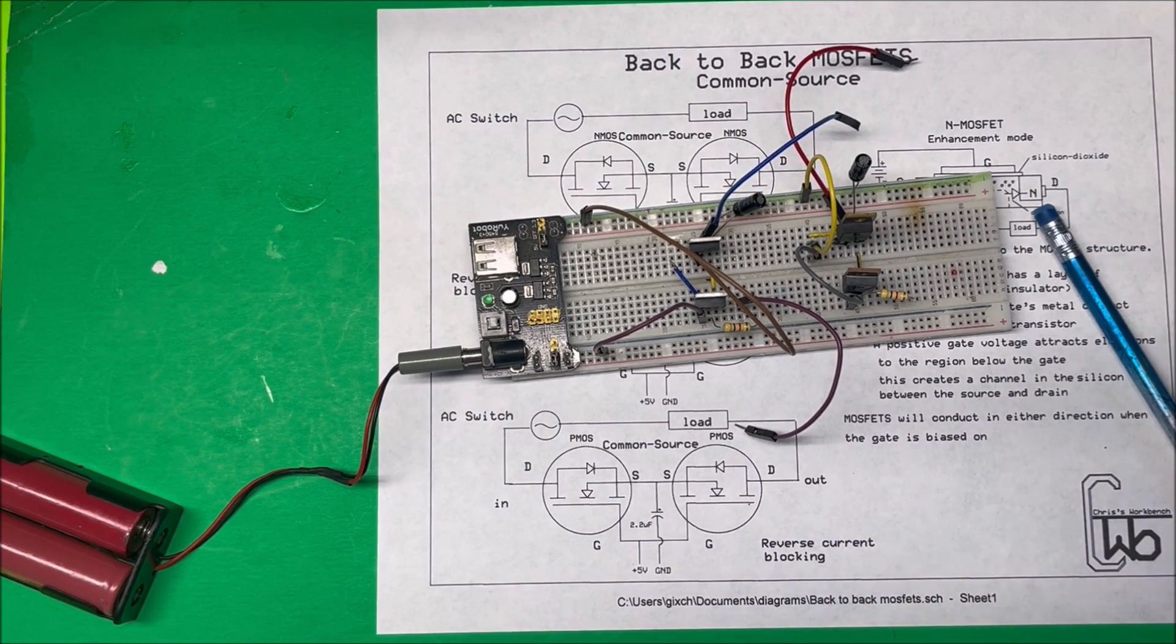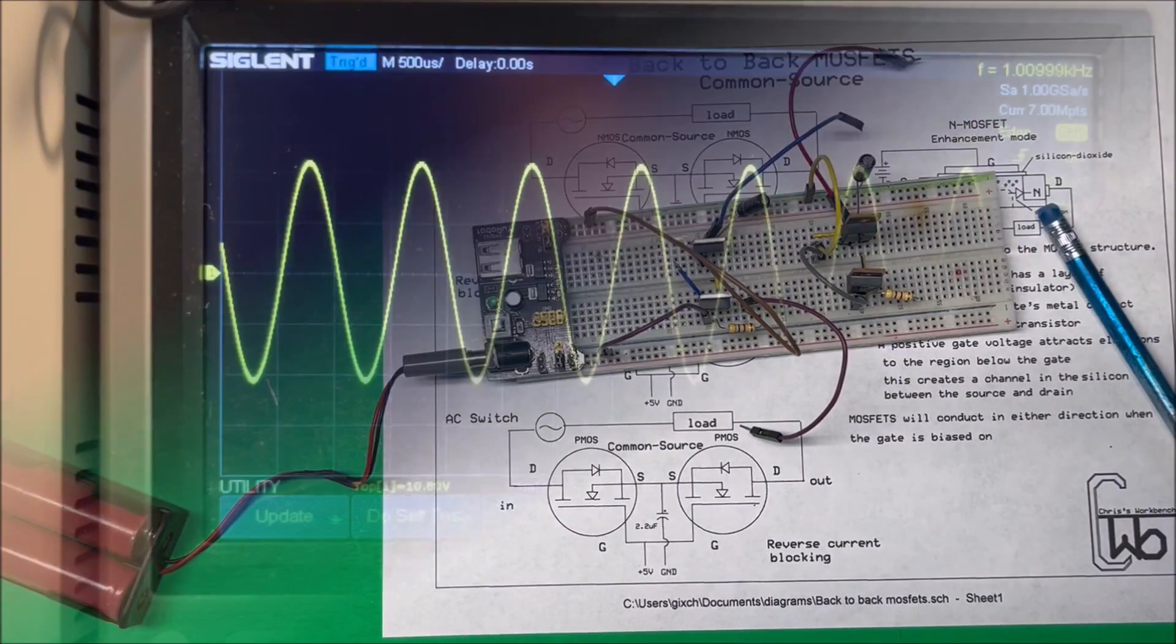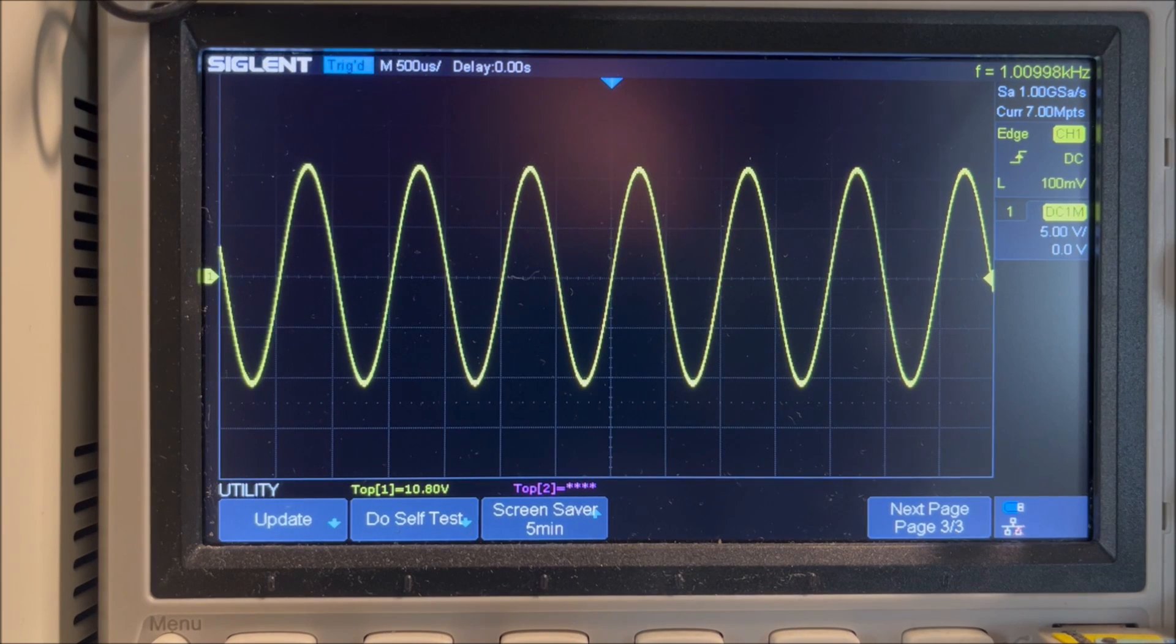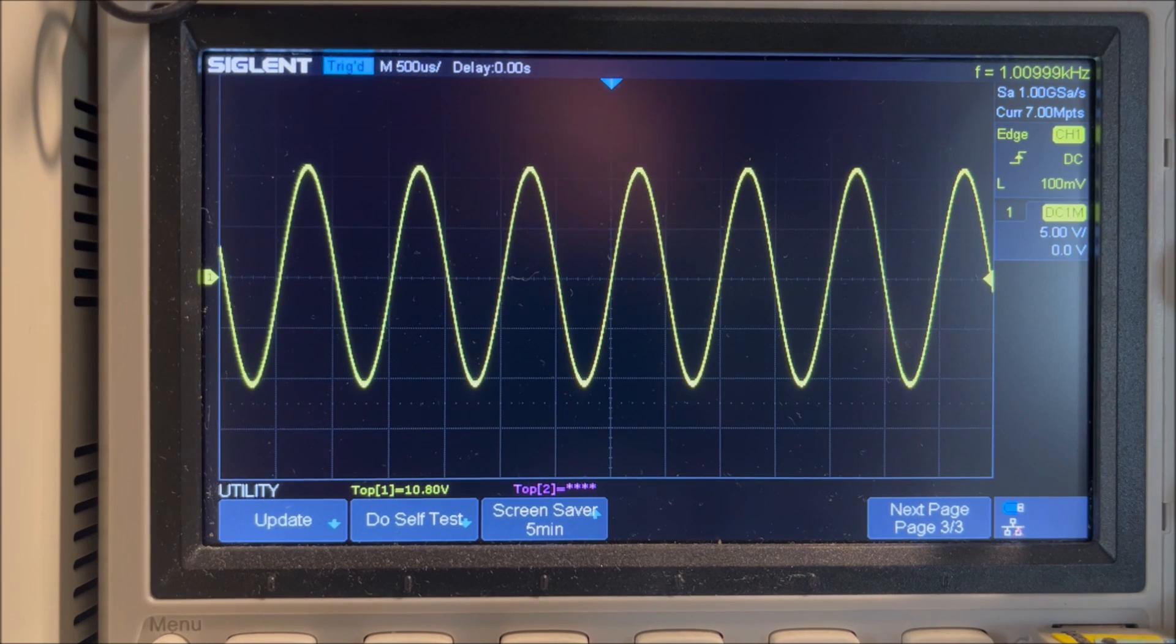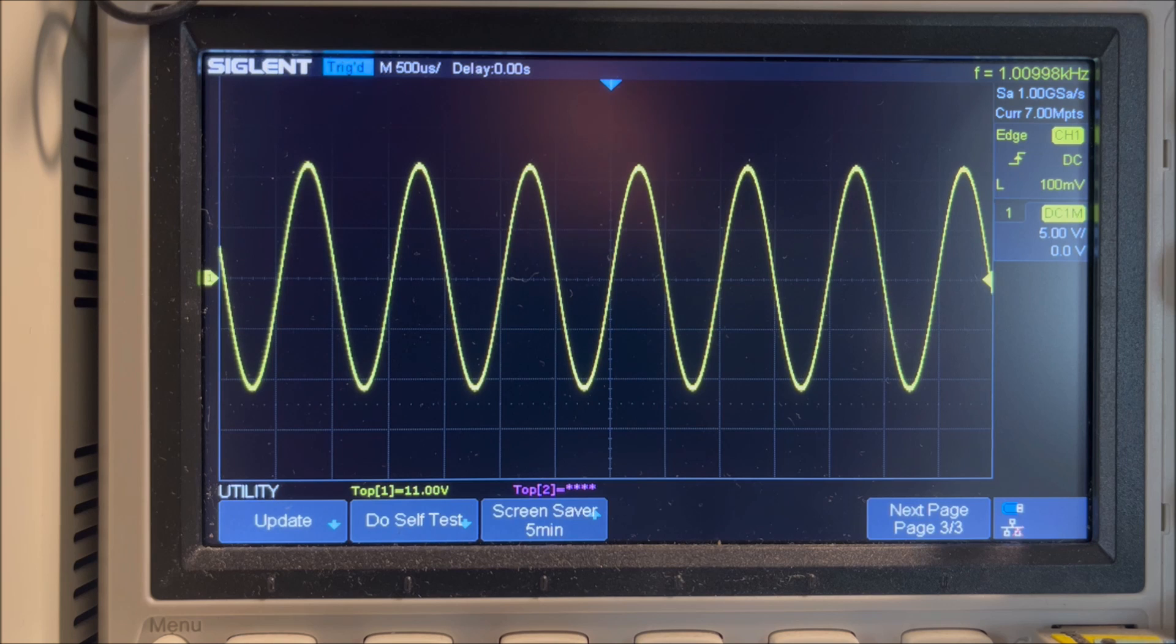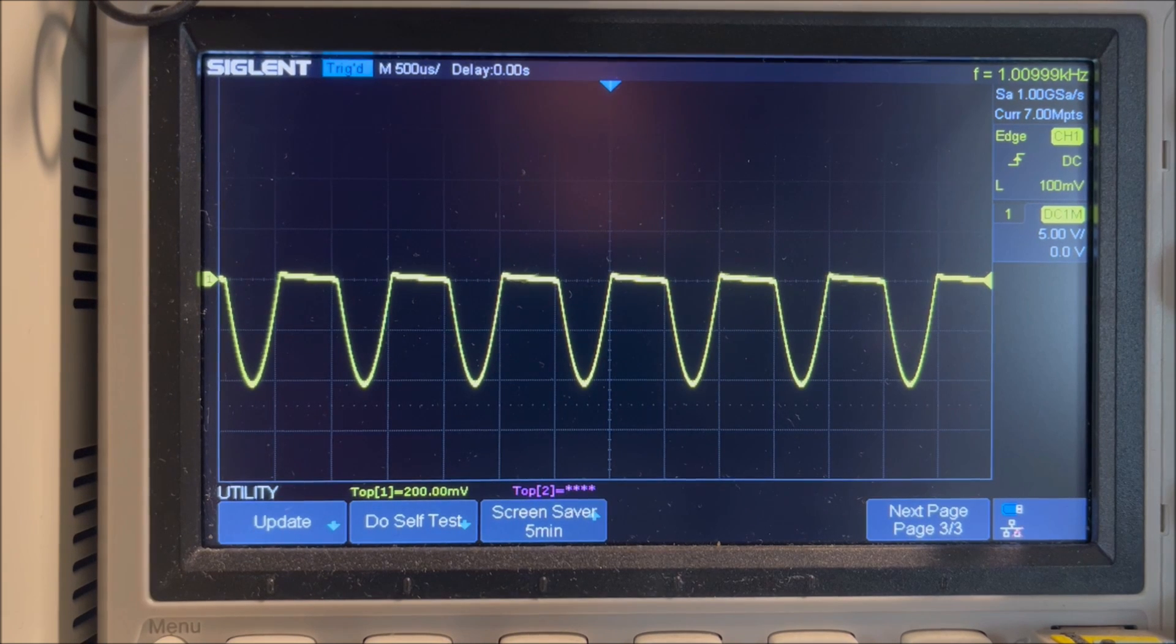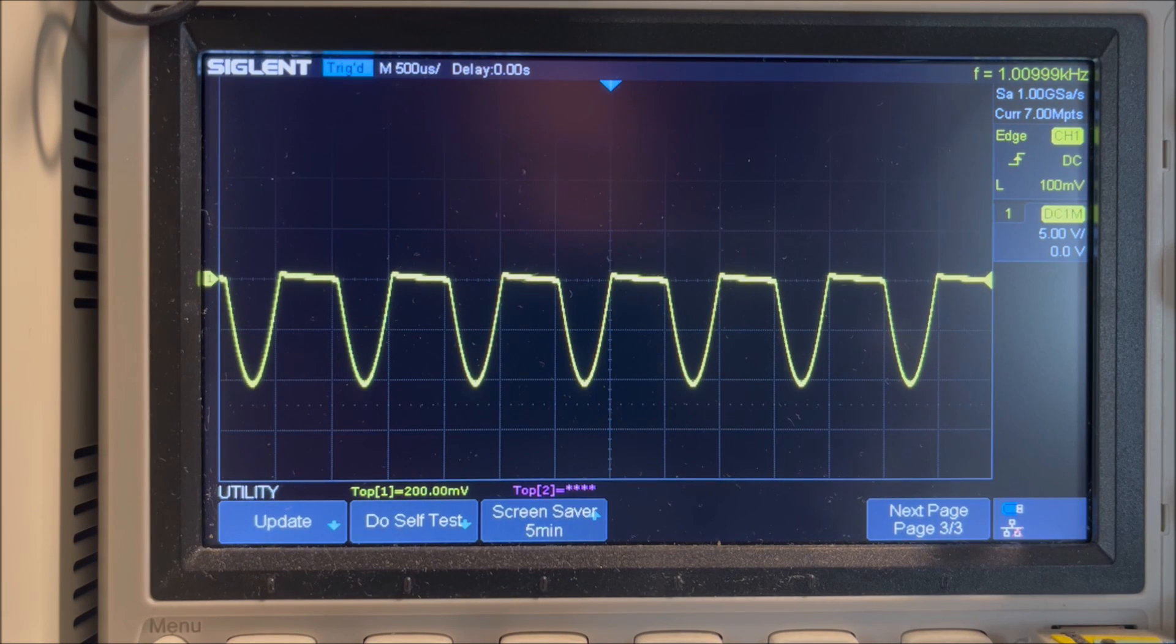Alright, here we are at the oscilloscope. I have a one kilohertz signal going through the MOSFETs - these happen to be two p-channel MOSFETs here. You can see I get a good sine wave through there. Now I'm going to turn one of them off. There we go - you see the diode in the other one is blocking the top part of the signal.